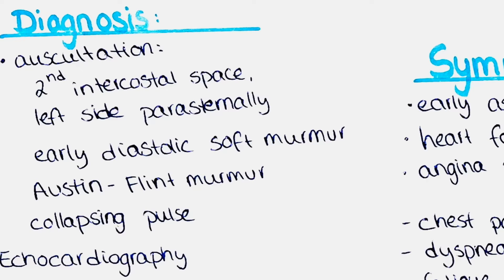In some cases, an additional murmur known as the Austin-Flint murmur may be heard at the apex of the heart. This murmur resembles a diastolic rumbling sound. It occurs due to the retrograde flow of blood over the mitral valve, causing vibration.